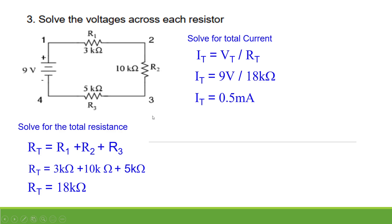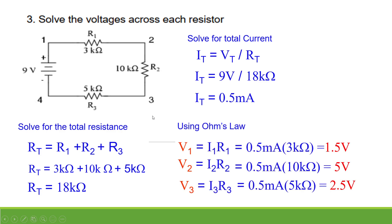Then using Ohm's law, we can get the voltages across each resistor. V₁ is 1.5 volts, V₂ is 5 volts, and V₃ is 2.5 volts.